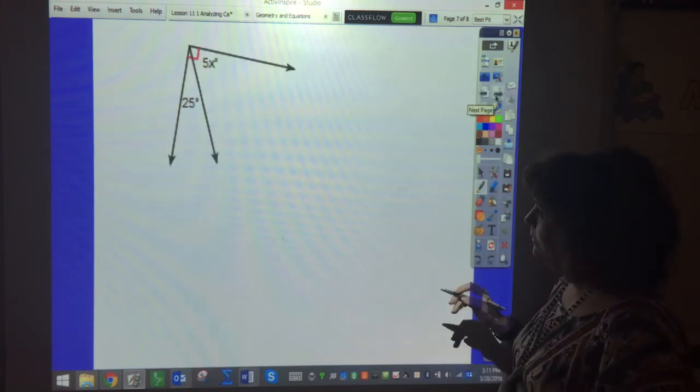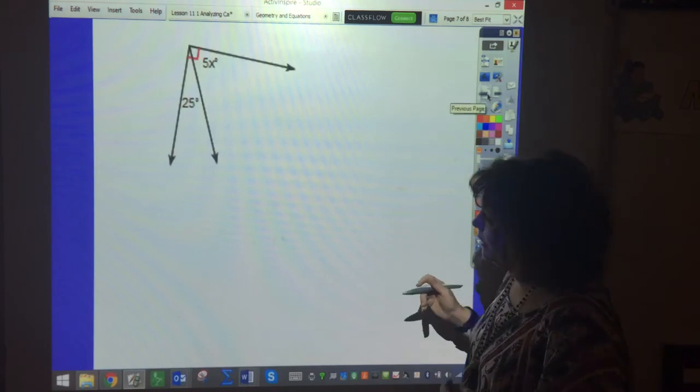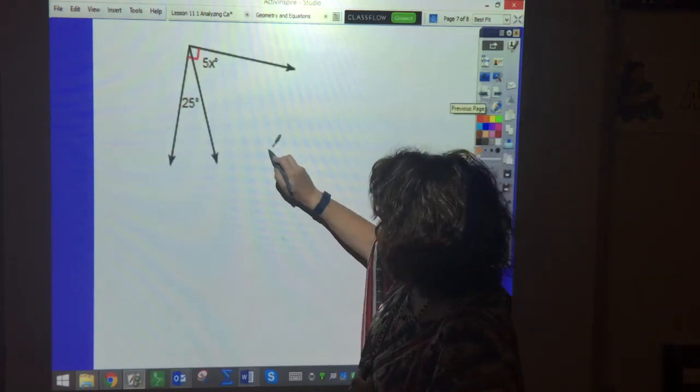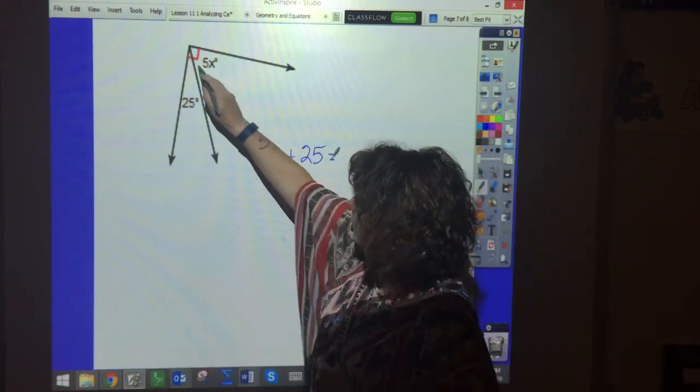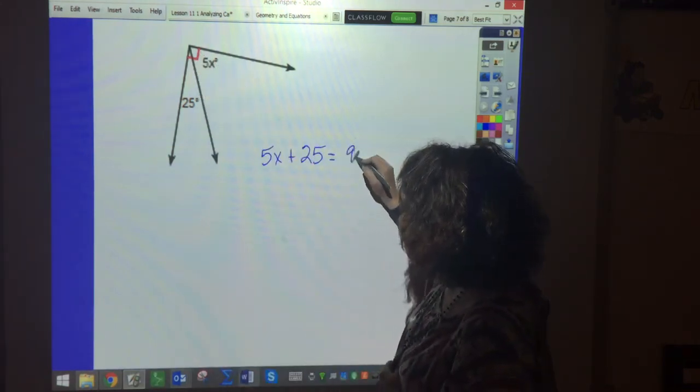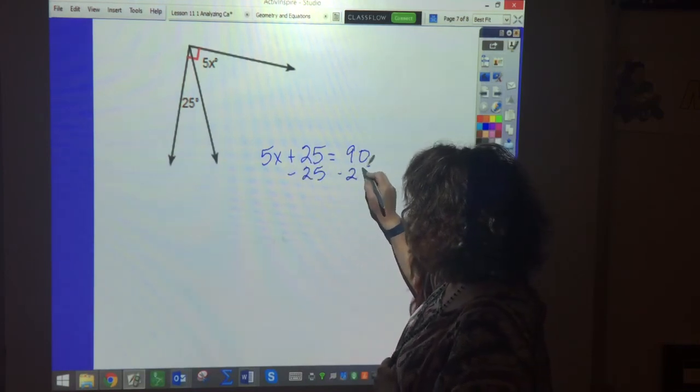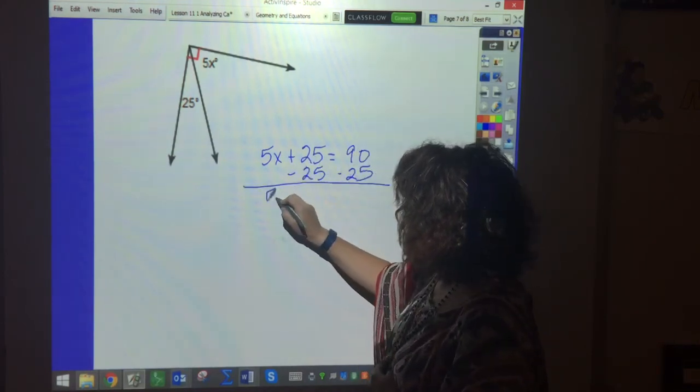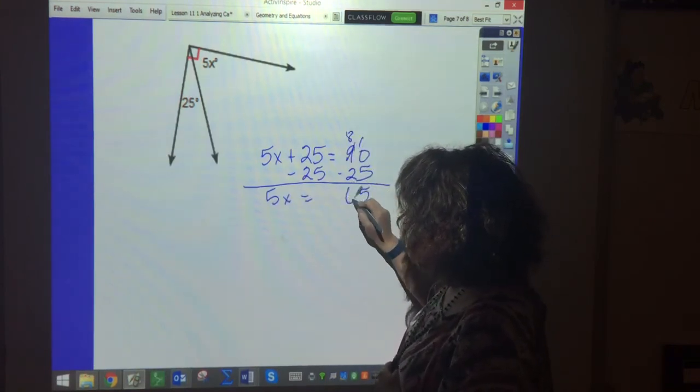Okay. This one is the last one. And so now we have 5X plus 25 equals, the square box tells me that it's 90. So subtract 25. So 5X equals 65.